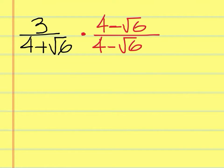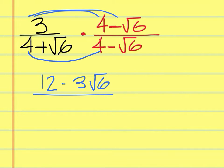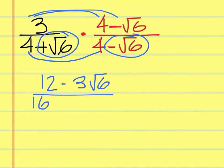We'll go back through and multiply this out on the top first. 3 times 4 is 12, and then 3 times minus square root of 6 is minus 3 square root of 6. And then on the bottom, you just do first, outside, inside, last. This times this is 16. Square root of 6 times square root of 6 is the square root of 36, which is 6. And since it's plus-minus, the sign is minus in the middle.